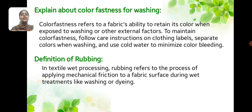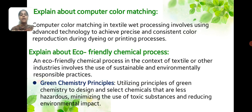Definition of rubbing. In textile wet processing, rubbing refers to the process of applying mechanical friction to the fabric surface during wet treatment, like washing or dyeing.